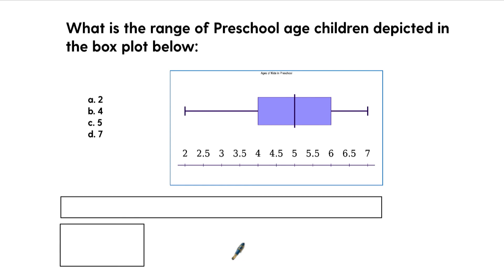So here is, what is the range of preschool children depicted in the box plot below? This is pretty typical. I know it's really small here. It just says age of kids in preschool. And you have enough information to answer these questions. So what this, again, represents is the lowest number. So we have a two-year-old in this preschool. And then over here, the highest kid is a seven-year-old. So the range is seven minus two, which is five.